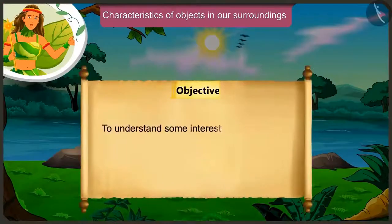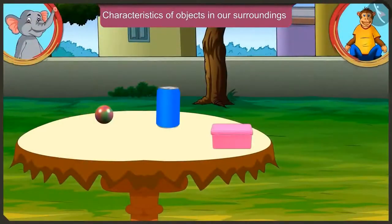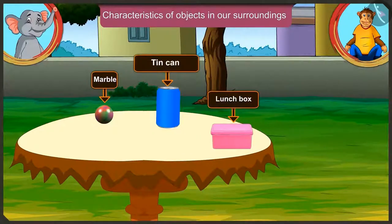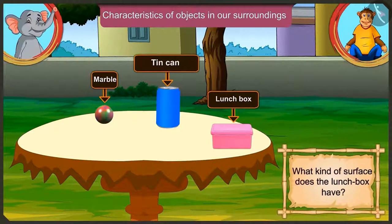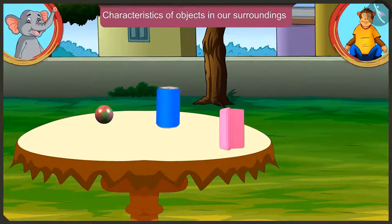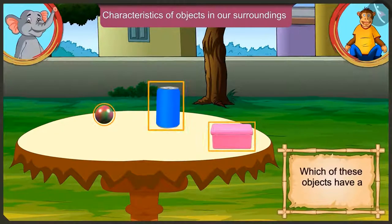Friends, today we will understand some interesting facts about the objects in our surroundings. Appu, look — few things are kept here: a marble, a lunch box and a tin can. Can you tell me what kind of surface the lunch box has? This lunch box has a flat surface, which we can also move by putting it upright. Now, which of them have a curved surface?